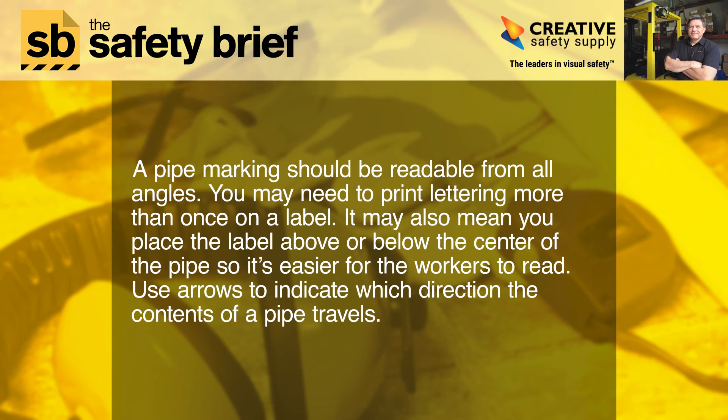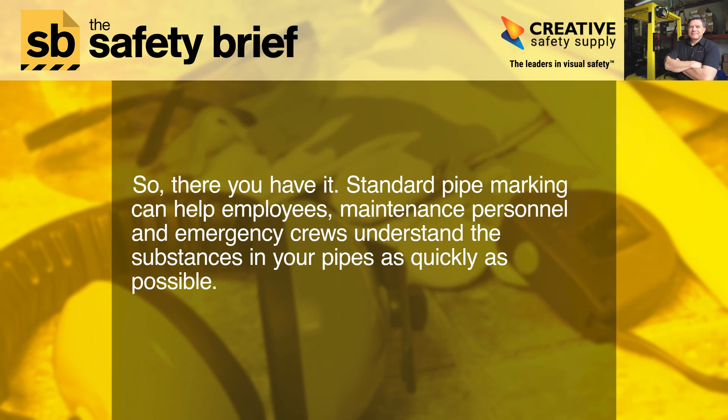A pipe marking should be readable from all angles — you may need to print lettering more than once on a label. It may also mean you place the label above or below the center of the pipe so it's easier for workers to read. Use arrows to indicate which direction the contents of a pipe travel.